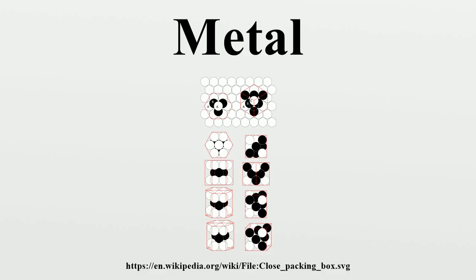Some metals have specialized uses. Radioactive metals such as uranium and plutonium are used in nuclear power plants to produce energy via nuclear fission. Mercury is a liquid at room temperature and is used in switches to complete a circuit when it flows over the switch contacts. Shape memory alloy is used for applications such as pipes, fasteners and vascular stents. Metals can be doped with foreign molecules — organic, inorganic, biological and polymers — entailing the metal with new properties that are induced by the guest molecules.